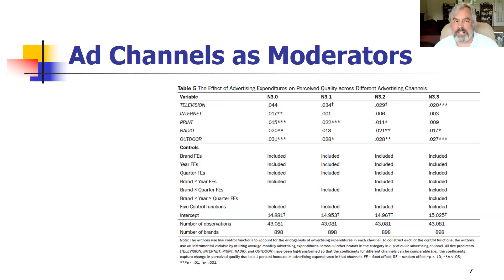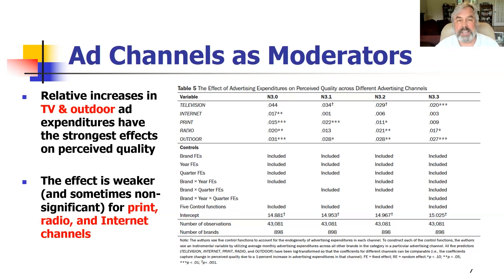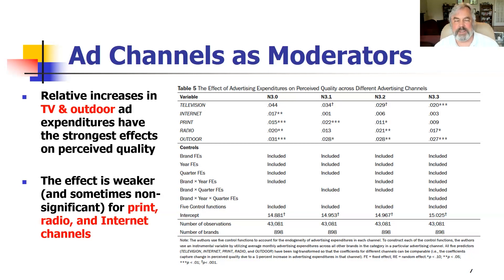We also found interesting moderators by ad medium. Our dataset allowed us to break down expenditures by TV and outdoor versus print, radio, and internet. TV and outdoor actually had stronger effects. Part of the reason is there's less information content in TV and outdoor, and the visibility of those expenditures seems to have a stronger effect on perceived quality compared to print, radio, and internet.